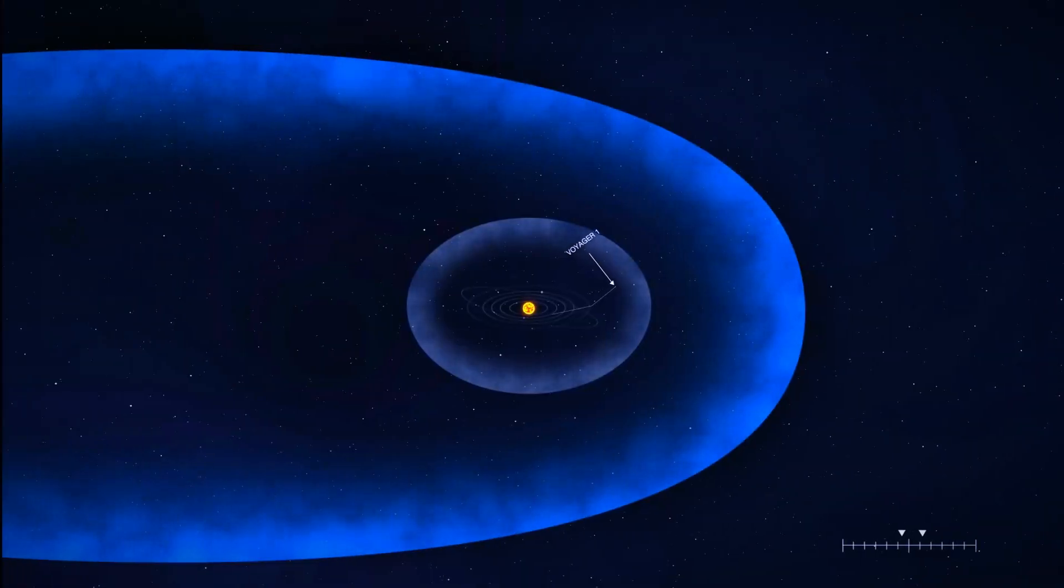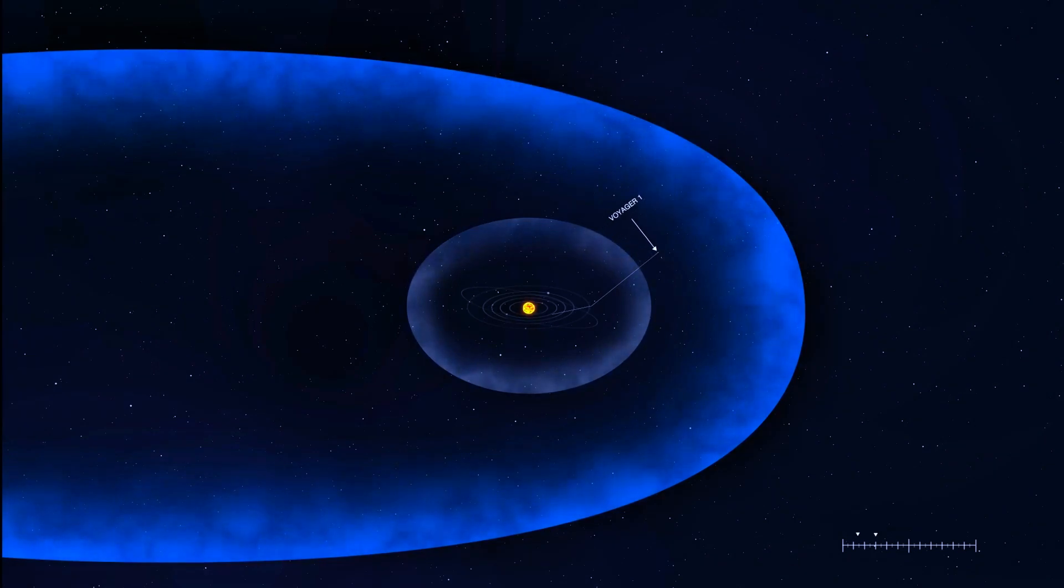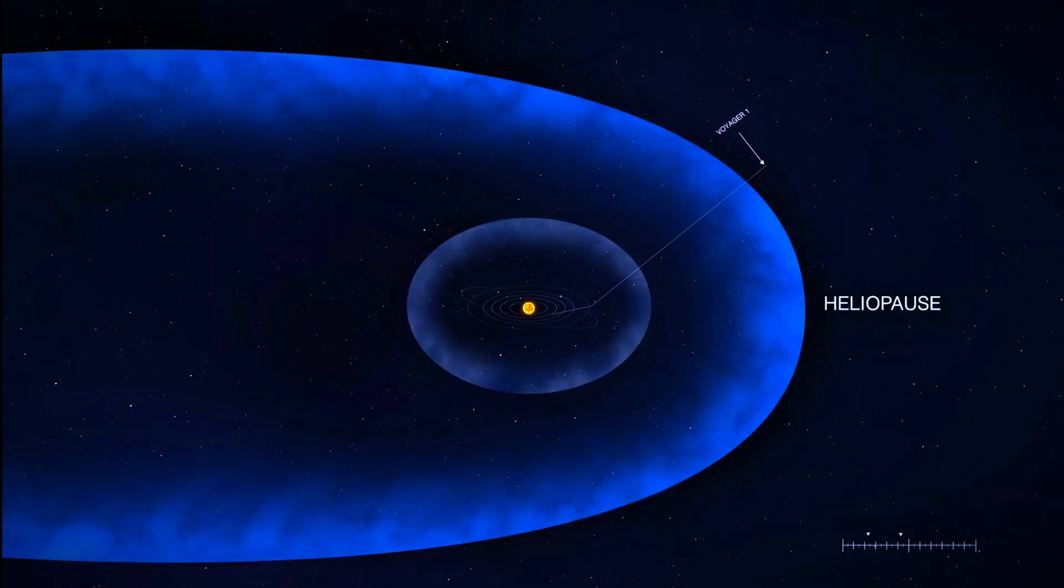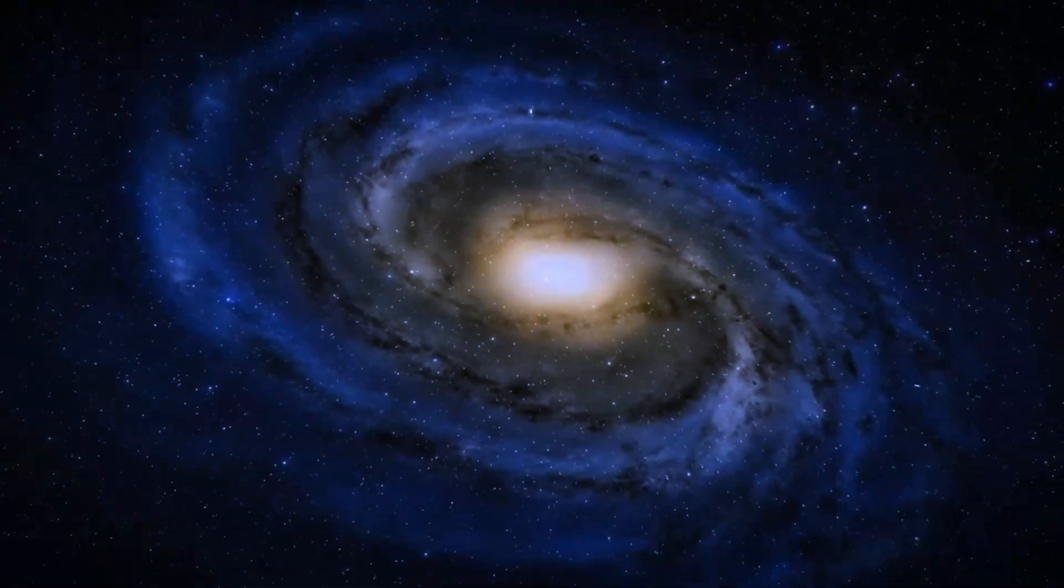Voyager 1's journey continued beyond the heliopause, the boundary between the heliosphere and interstellar space, on August 25, 2012. It became the first human-made object to enter interstellar space, followed by its twin six years later.